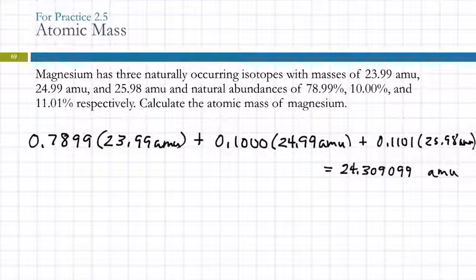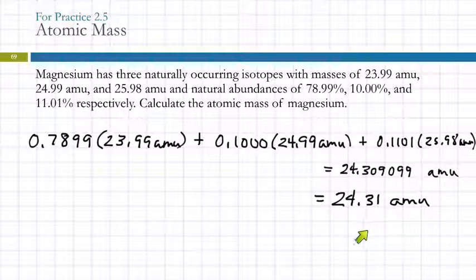What I'd like you to do is be reasonable. So our percent abundances had four significant figures. Our masses had four significant figures. So it's probably not realistic that we've gained a bunch of significant figures. So a reasonable rounding of this would be 24.31 atomic mass units. Comparing this to the one on the wall, if we rounded that to two decimal places, we'd come up with 24.31. This calculation was not done with the most precise numbers, but it gets tedious, and so that's why it doesn't come out exactly to what's on the wall.